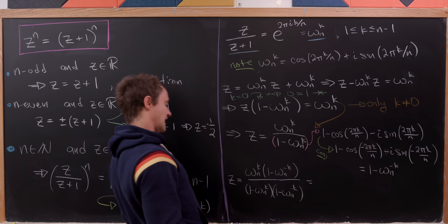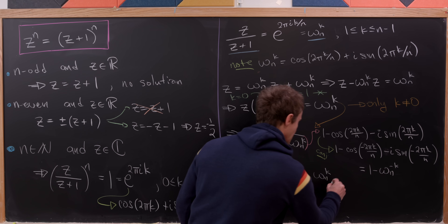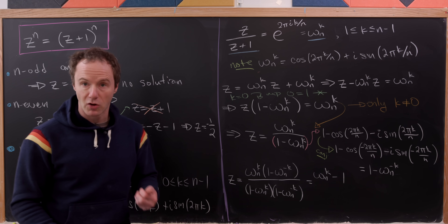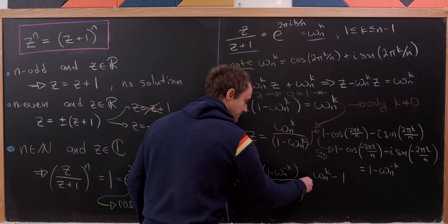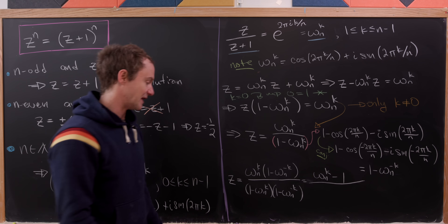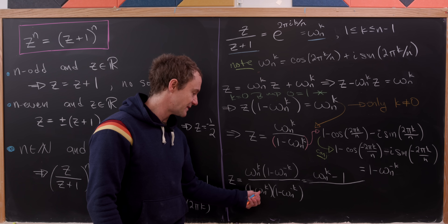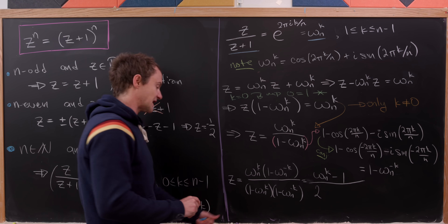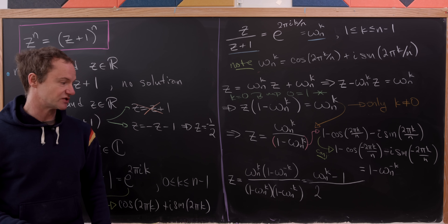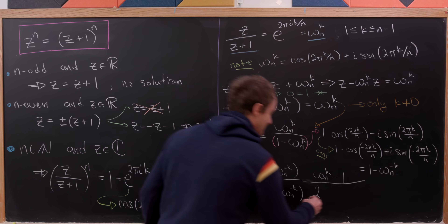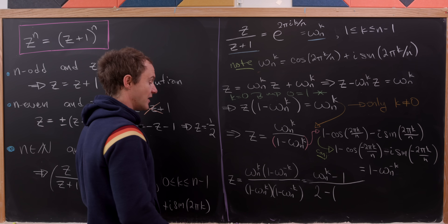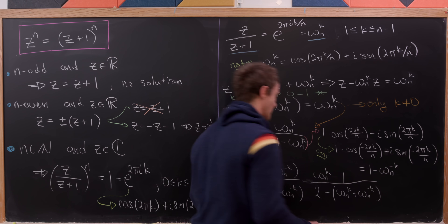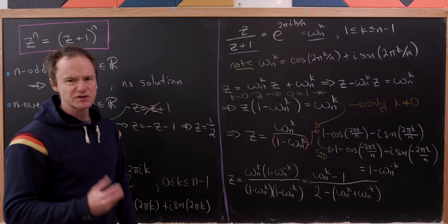Multiplying out: in the numerator we get omega sub n to the k minus one, because omega sub n to the k and omega sub n to the minus k are multiplicative inverses. In the denominator, one times one is one, and omega sub n to the k times omega sub n to the minus k is also one — so those give one plus one, which is two. The minus signs cancel, and the cross terms give minus the sum omega sub n to the k plus omega sub n to the minus k.